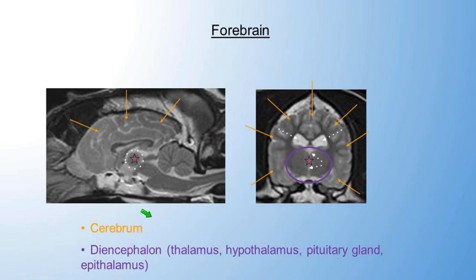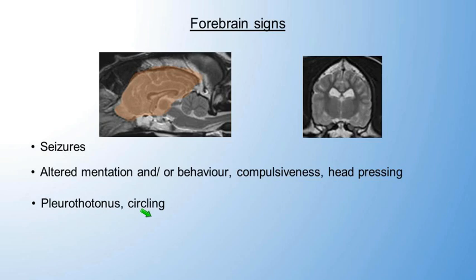Can anybody define pleurothotonous? Elizabeth Passmore said it correctly - it's a truncal turn. I always describe it as a banana turn of the head and body. To distinguish it from a head tilt indicating vestibular dysfunction: with a head tilt one ear will be lower than the other, whereas with pleurothotonous the animal has this banana shape. Pleurothotonous and circling display to the ipsilateral side of the lesion, whereas proprioceptive deficits, blindness, reduced facial sensation, and hemispatial neglect syndrome appear contralateral.